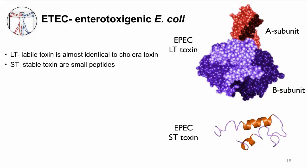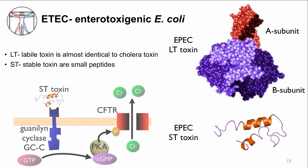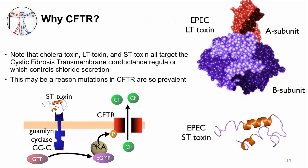LT toxin is almost identical to cholera toxin — it has A and B subunits and functions the same way. It is labile because it's a large protein that is inactivated by boiling. ST toxins are small peptides that refold when boiled and remain active and stable. ST toxin opens the CFTR chloride channel via a slightly different signaling pathway compared to cholera toxin. Why is CFTR targeted? Cystic fibrosis results from genetic mutations in the CFTR gene commonly seen in people of European descent. Animals with a mutated CFTR gene have less diarrhea from cholera and ETEC infections, so the survival advantage may explain why CFTR mutations are so prevalent.